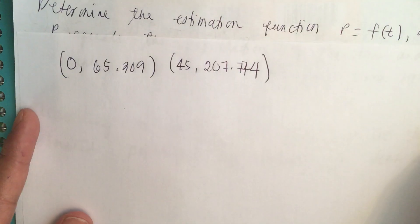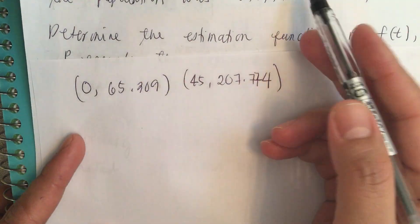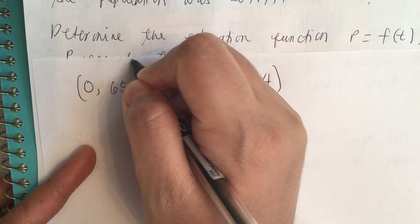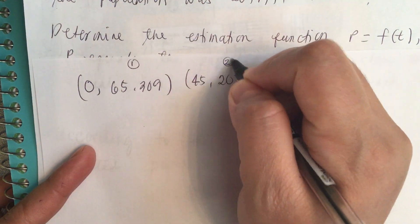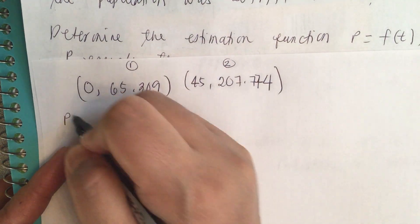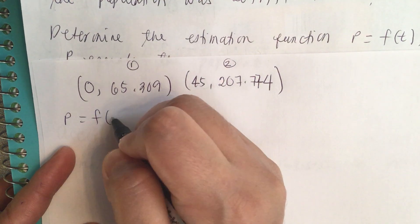From these two data points, we're going to make our linear function. We call this point 1, and we call this point 2. P is equal to F of T.